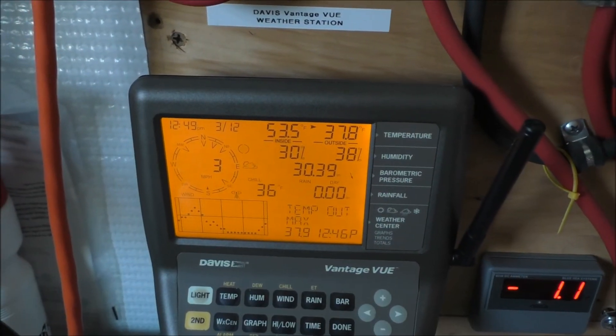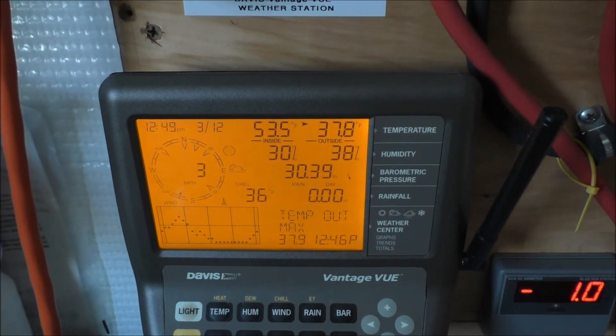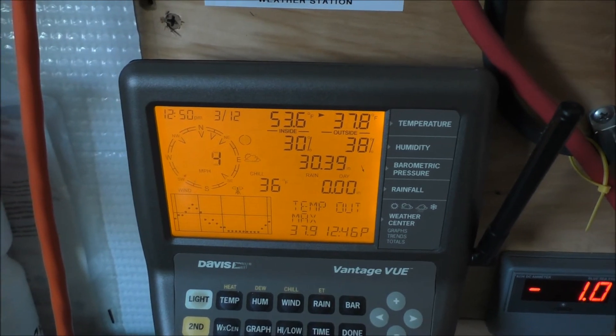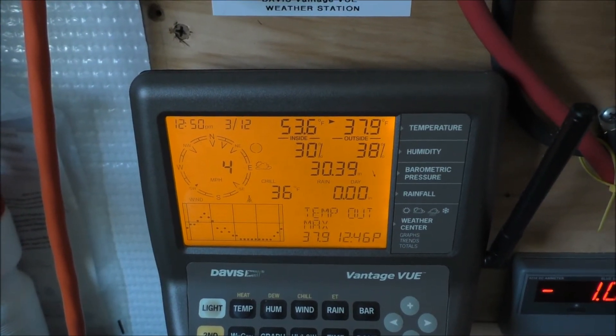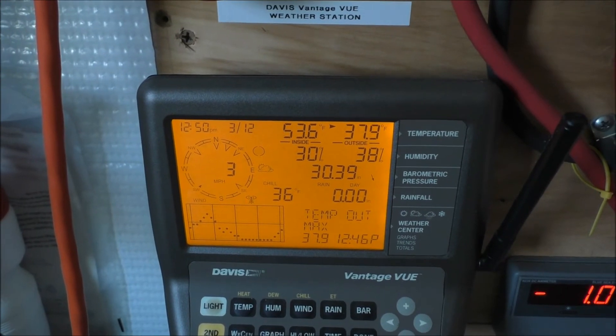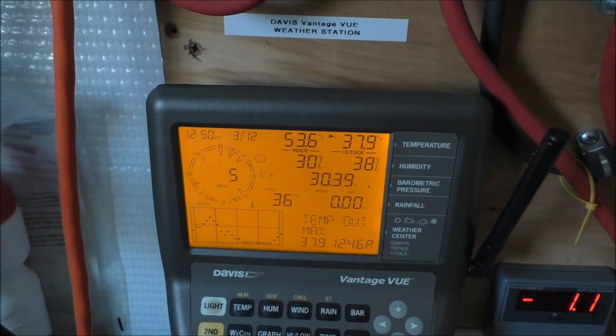Okay, conditions outside folks. Right now about 3-mile-an-hour wind, it's 37.9 outside, we're at 38 degrees, and it's 12:50 in the afternoon.